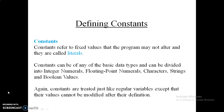First of all, what is a constant? Constants are values that are fixed and neither altered nor changed throughout the execution of the program. Constants are also referred to as literals. They are divided into different categories based on data types: integer constants, floating point constants, character constants, string constants, boolean constants, and many more.